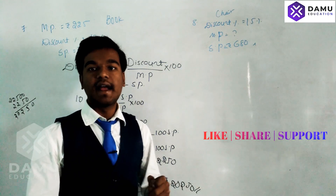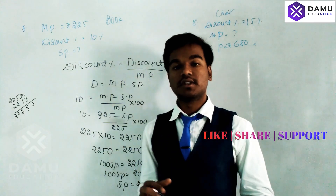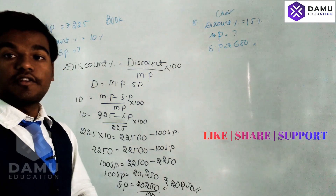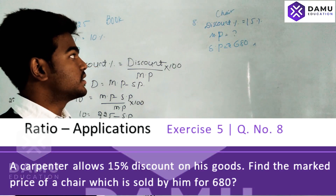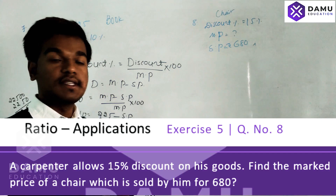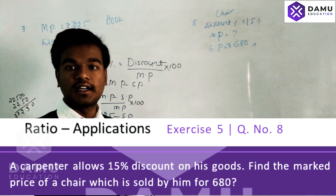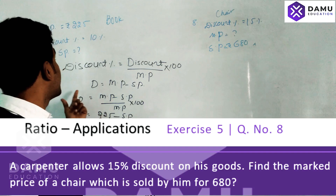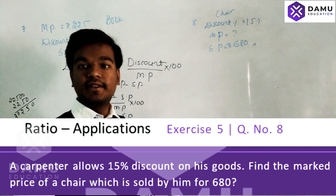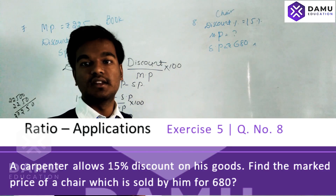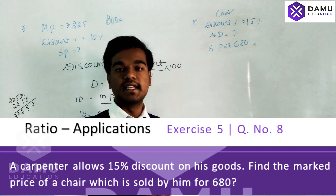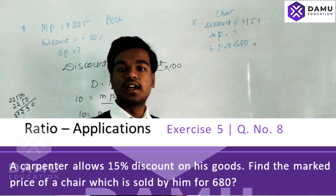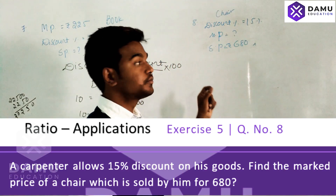The selling price after giving a 10% discount on 225 rupees is 202.50 rupees. Our next question: a carpenter's chair is given a discount of 15%. After giving this discount, the selling price becomes 680 rupees. We have to find the market price — this is the reverse of the previous question. In the previous question, discount percentage and market price were given; here, market price is always more than selling price before giving discount.